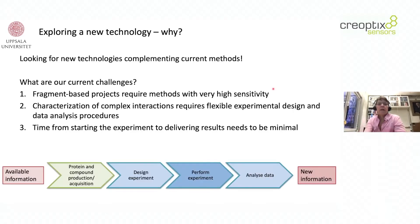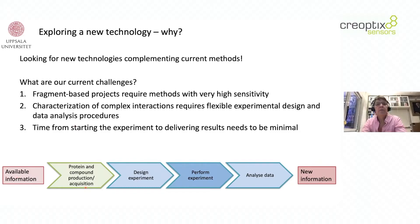If we look at the typical procedure for an experiment, you have available information — you know something about your project, you need to produce your protein and get hold of compounds — then you design your experiment, you perform your experiment, you analyze data, and then you have the new information. The technologies we're using are all related to these blue arrows here.